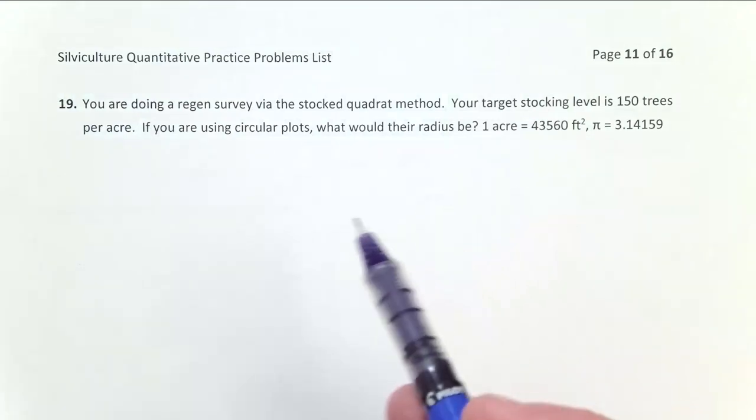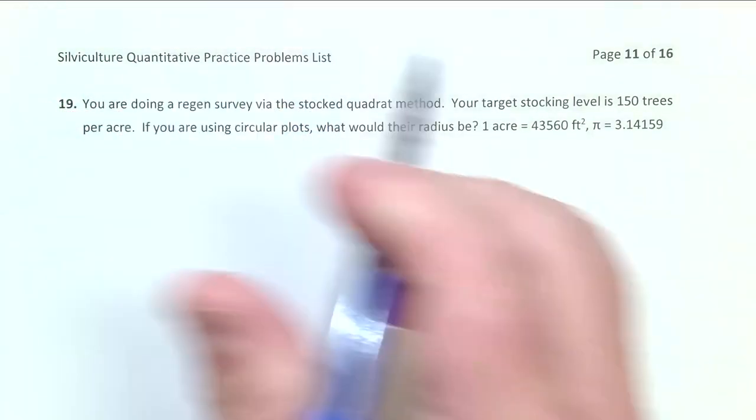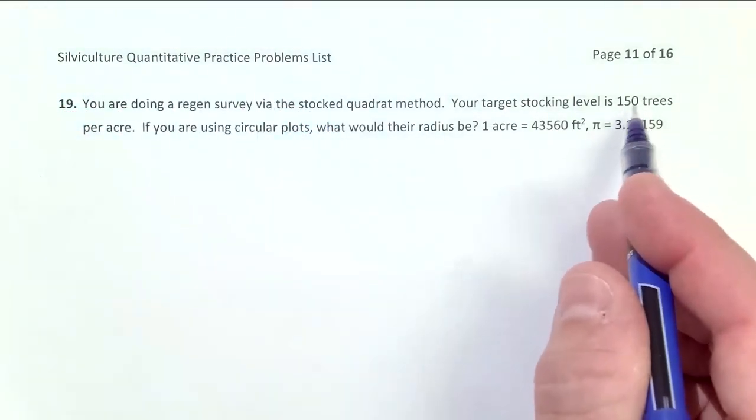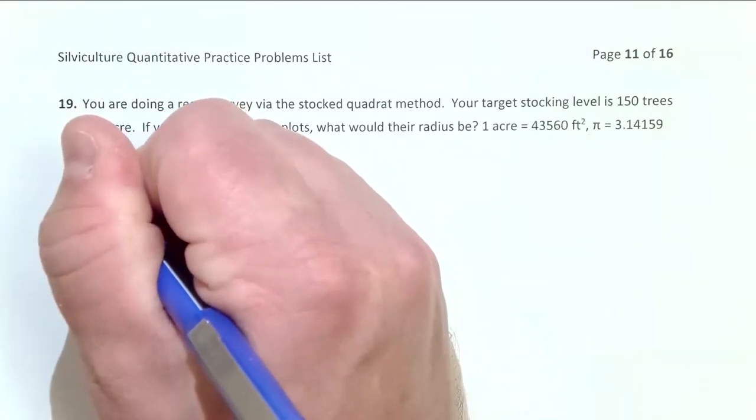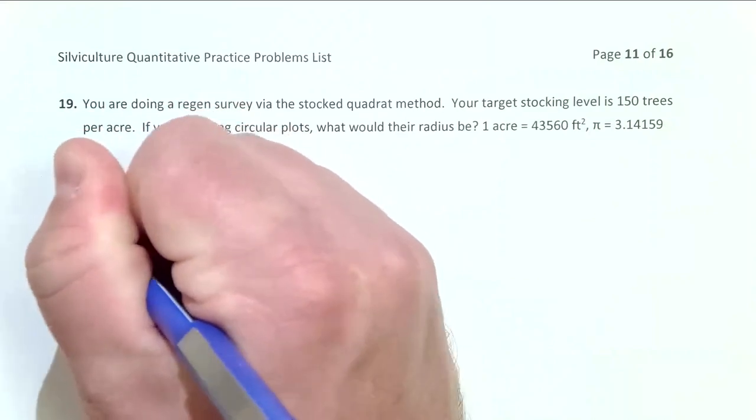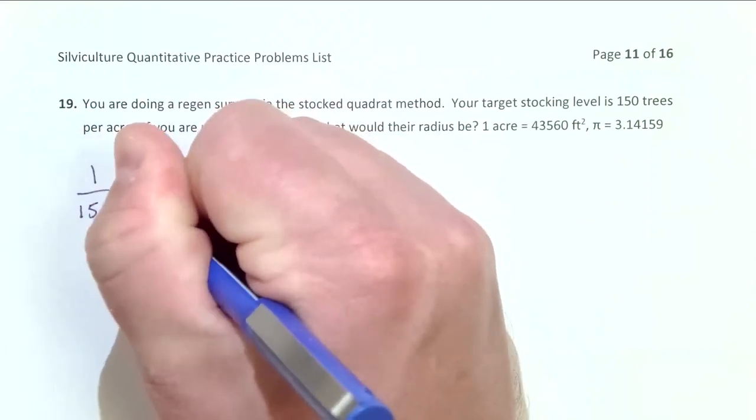So first, I need to calculate the area. In order to know the radius of the plot, I have to calculate the area. So the nice thing about stocked quadrat, your plot size is the inverse of your trees per acre. So if I want 150 trees per acre with a stocked quadrat plot system, I want a 150th acre plot.